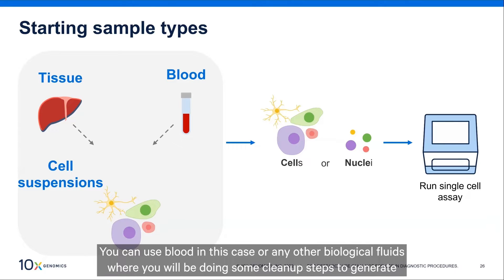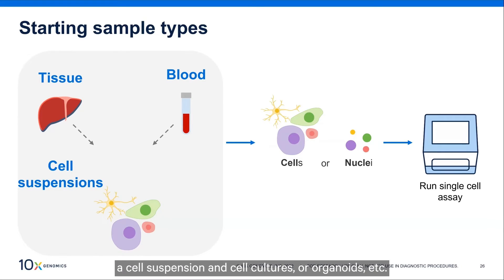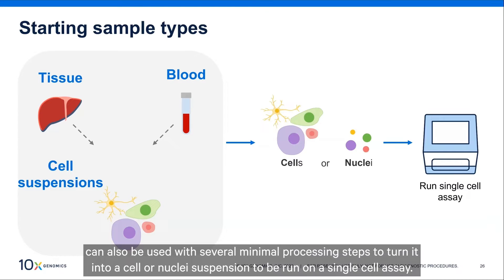You can use blood or any other biological fluids, where you will do some cleanup steps to generate a cell suspension. Cell cultures or organoids can also be used with several minimal processing steps to turn them into a cell or nuclei suspension to be run on a single-cell assay.